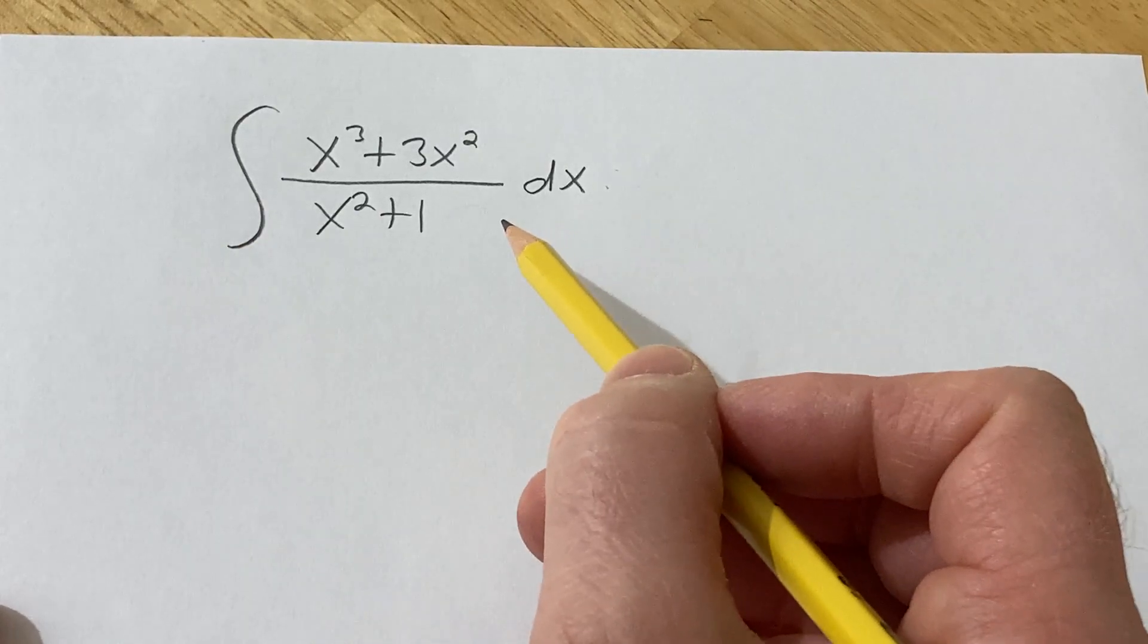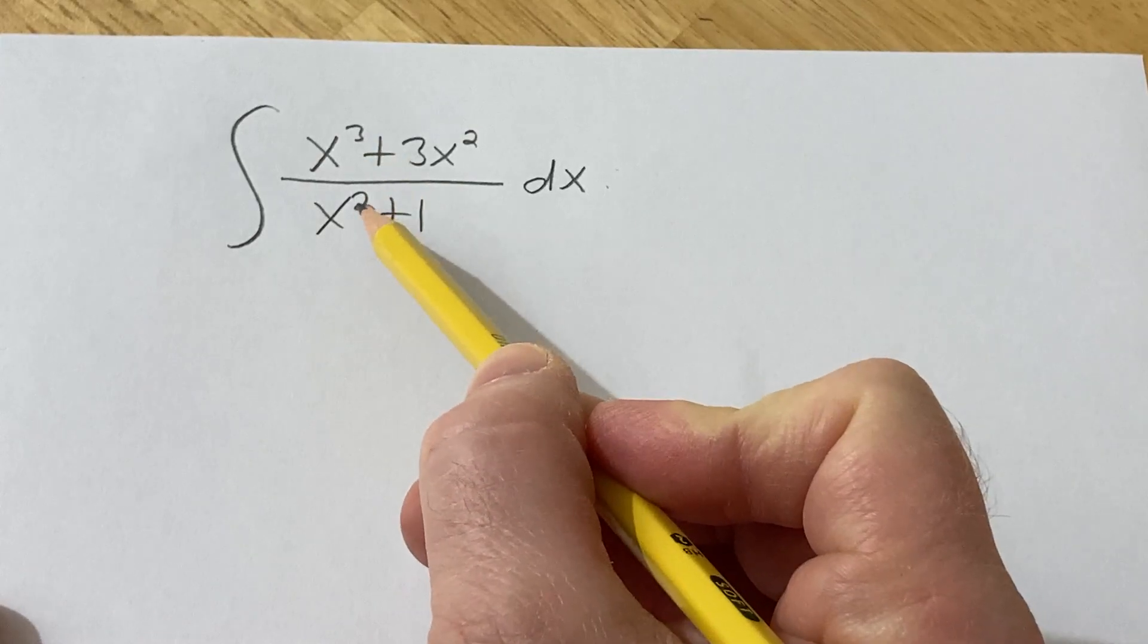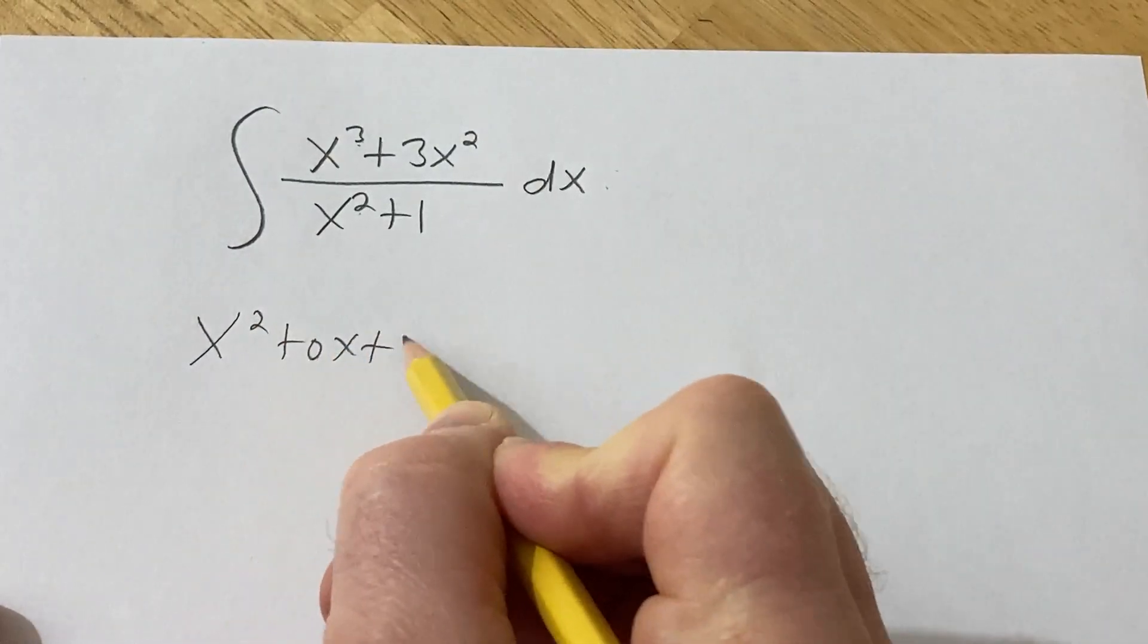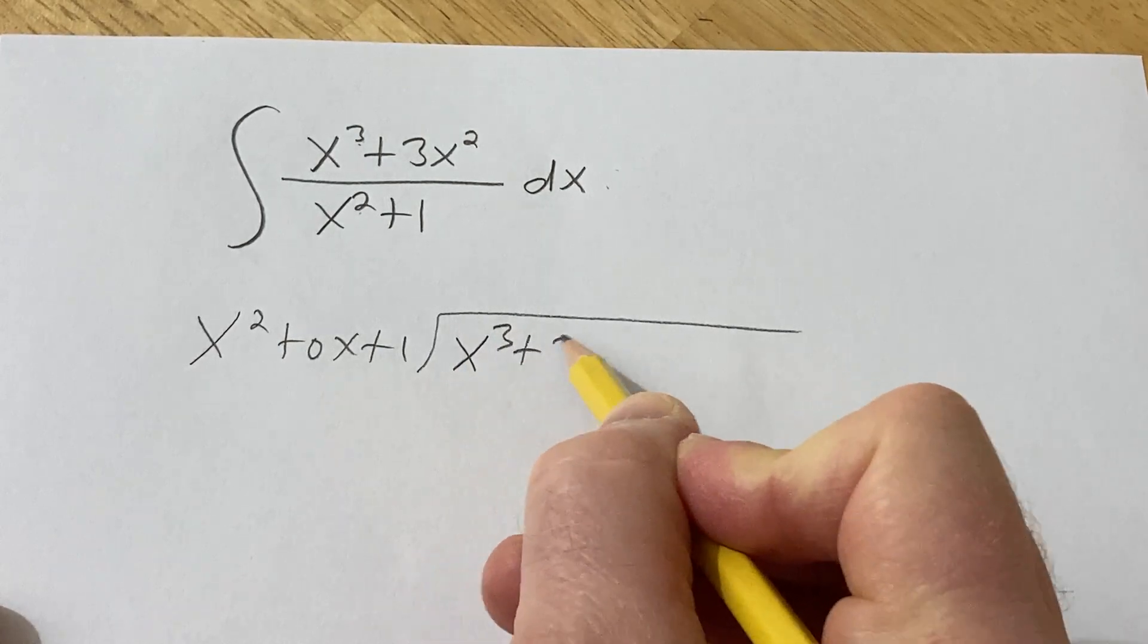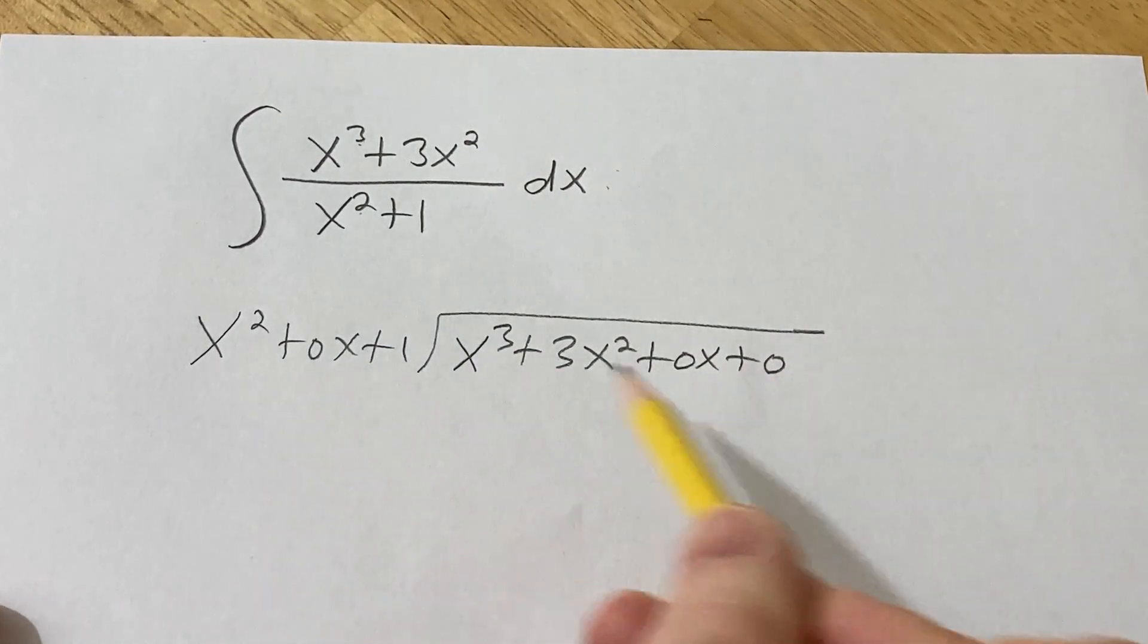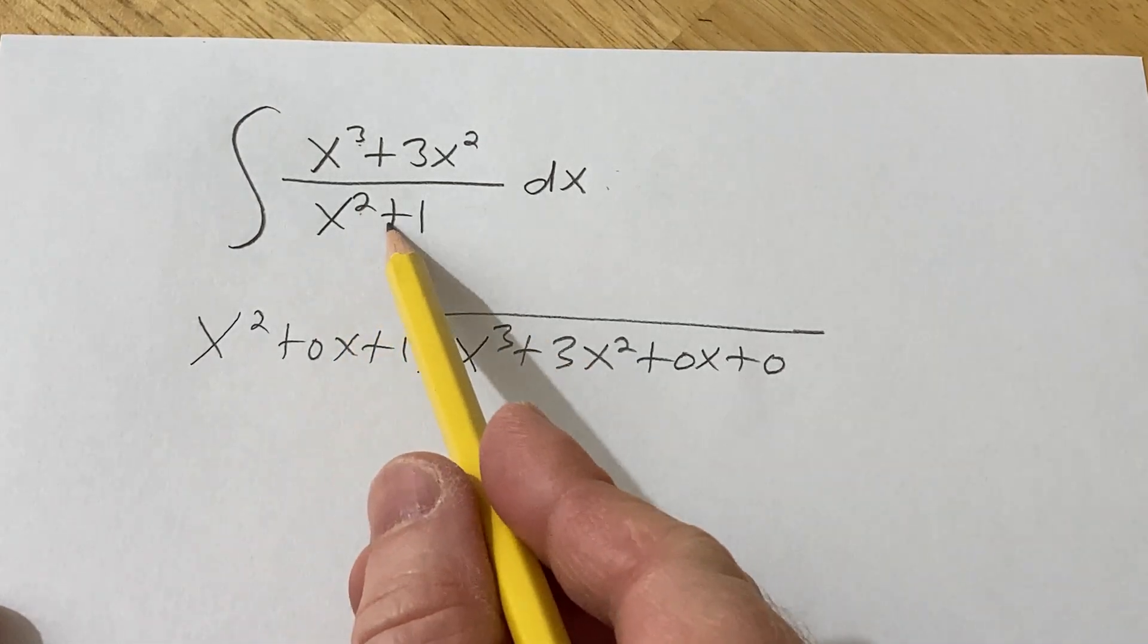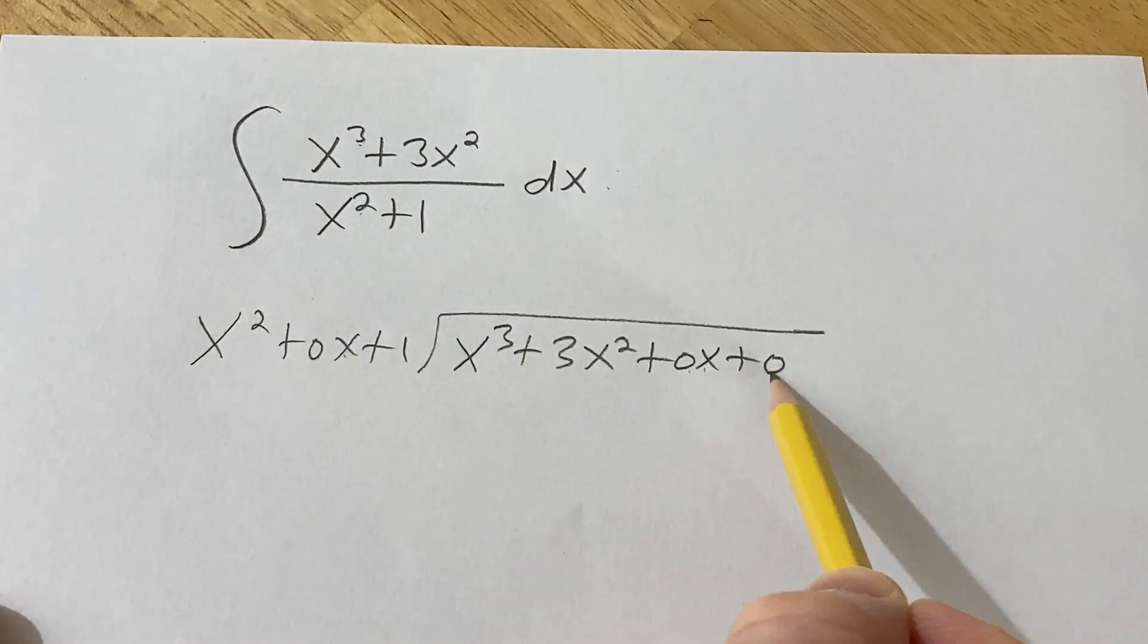Let's do the process of long division, and again, we're going to do that because the degree in the numerator is bigger than the degree in the denominator. So I'm going to go ahead and write it out. x squared plus 0x plus 1. I like to fill my placeholders in. And then x cubed plus 3x squared plus 0x plus 0. I like to fill in all missing powers of x with 0 and the appropriate power of x. So here we were missing a power of x, so 0x. Here we were missing the power of x and also the constant.